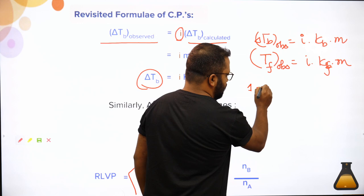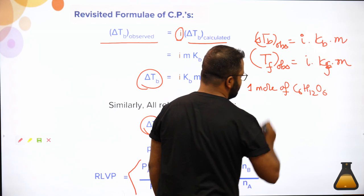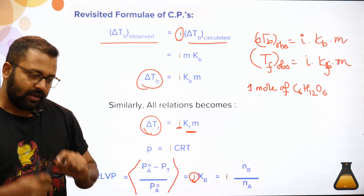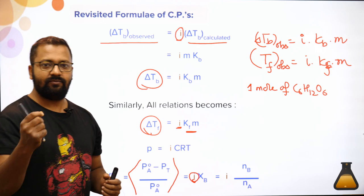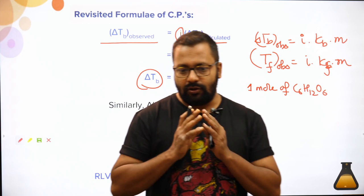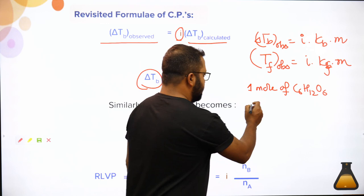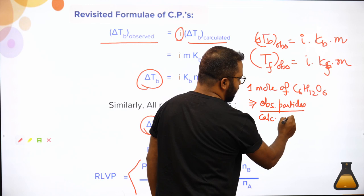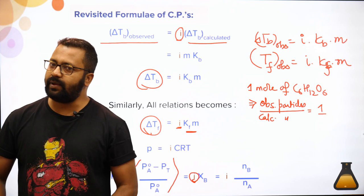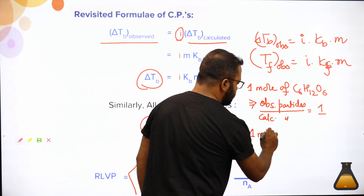As an example, take one mole of glucose (C₆H₁₂O₆). Will glucose dissociate? No, it does not dissociate in water. So if I write observed particles divided by calculated particles, this will be equal to one — i = 1 for glucose.